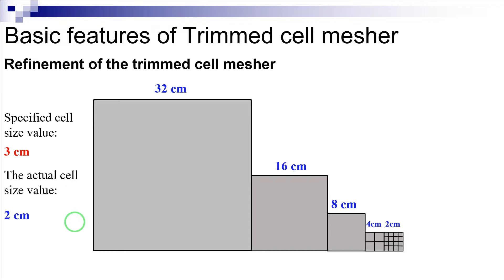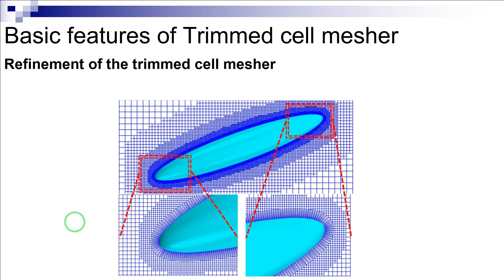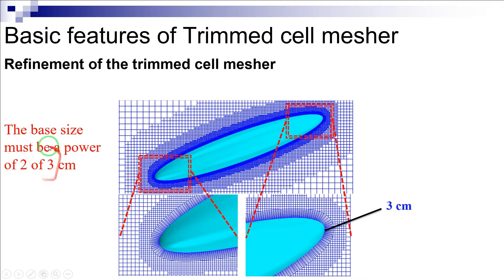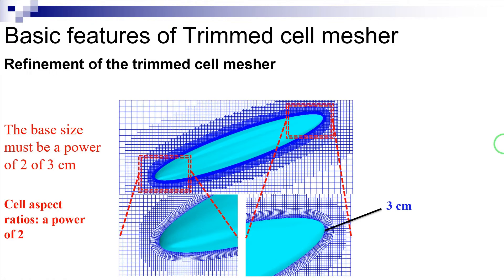For instance, consider that we want to generate a grid around this body where it is required that the grid size on the body surface be 3 centimeters. For this purpose, the base size of the mesh must be a power of 2 of this required cell size, which is 3 centimeters, in order to actually realize the exact desired value. A consequence of this limitation is that cell aspect ratios will always be a power of 2 as well.